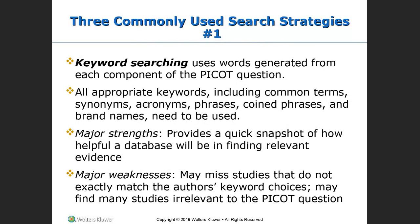Some of the common search strategies include using words generated from each component of the PICO question. All appropriate keywords — including common terms, synonyms, phrases, brand names — anything that might lead you to what you need. A major strength is that this provides a quick snapshot of how helpful a database may be in finding relevant data to your question. On the other hand, you may miss studies that don't exactly match the author's keywords, or find things not relevant to your PICO-T question. But this is probably one of the easiest strategies to start with.